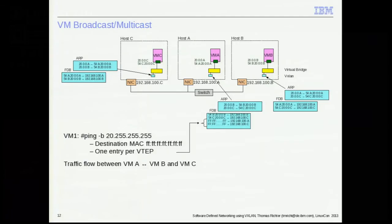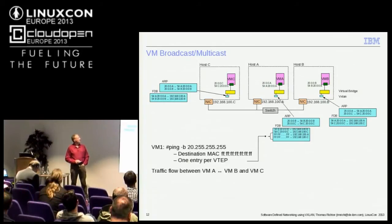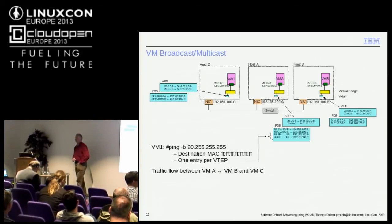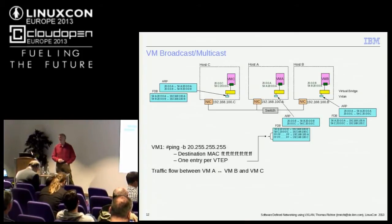If you have no multicast and you want to send a broadcast from the upper level and you don't have an all-Fs entry, it won't send that packet — it will send a netlink message to user space. Or, for example, when you create the virtual machines, you know what your other target endpoints are and you can create those entries in advance.